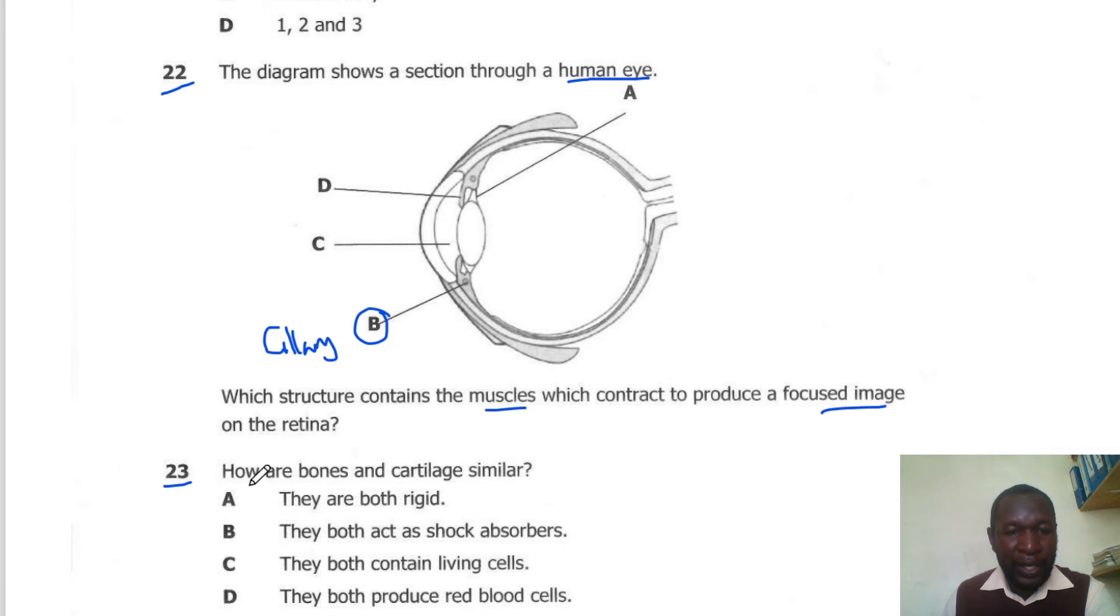Question 23. How are bones and cartilage similar? The bones and cartilage both contain living cells. So the correct answer here is C.